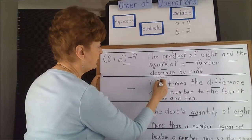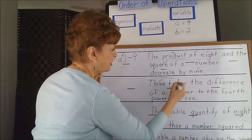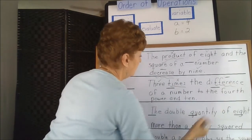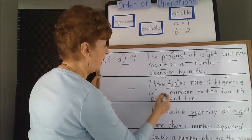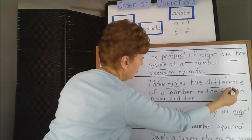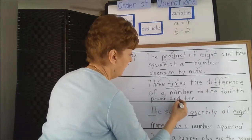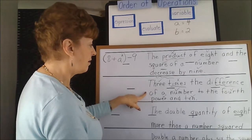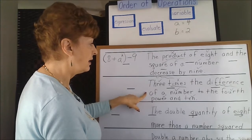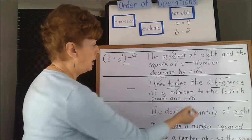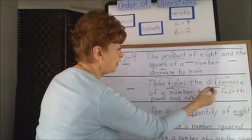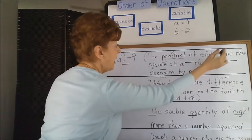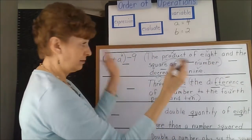3 times — here's the multiplication clue — 3 times the difference, here's another clue for an operation — the difference of a number to the 4th power and 10. So, 3 times the difference of a number to the 4th power and 10, so we're going to need to group the difference of a number to the 4th power and 10. The same here — the product of 8 and the square of a number was a grouping area.